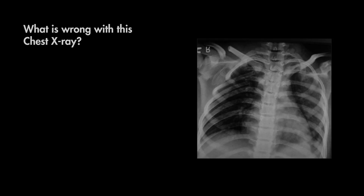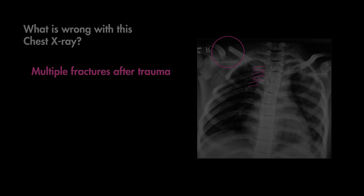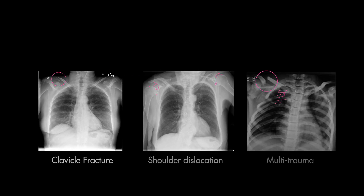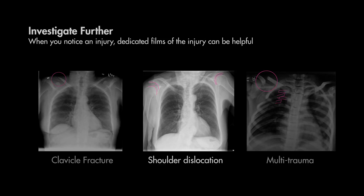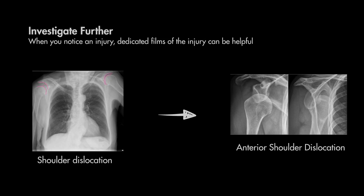Some x-rays are a little more obvious, like this one, which has both rib and a clavicular fracture after trauma. For a lot of these fractures that you catch on chest x-ray, there are also dedicated films that you could get of the affected bone or joint, which is often necessary to get the appropriate views to determine the extent of the injury, like you see here in this dedicated shoulder x-ray.